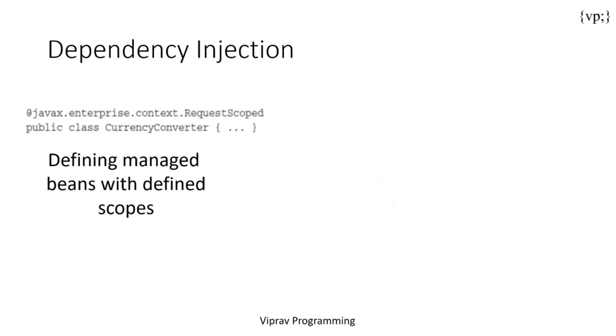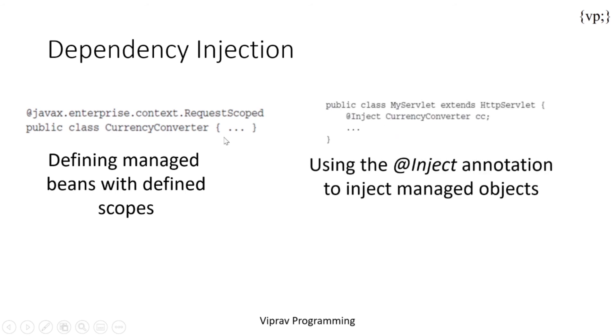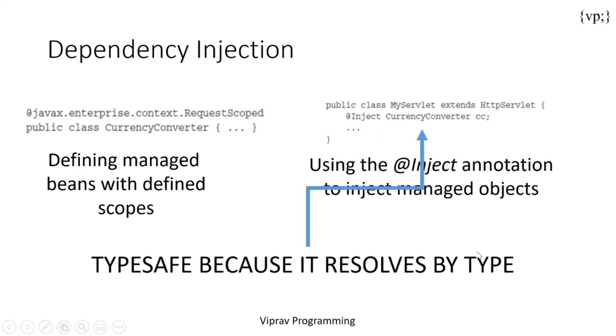So here's an example of that. Here you can see that you can define your managed bean with a defined scope. And here the defined scope would be a request scoped, which means it takes care of only one request. You can then inject this class or this managed bean in this case into this managed bean, your MyServlet. You can then inject it using the @Inject. This is actually type safe because they're resolved by the type you can see over here.